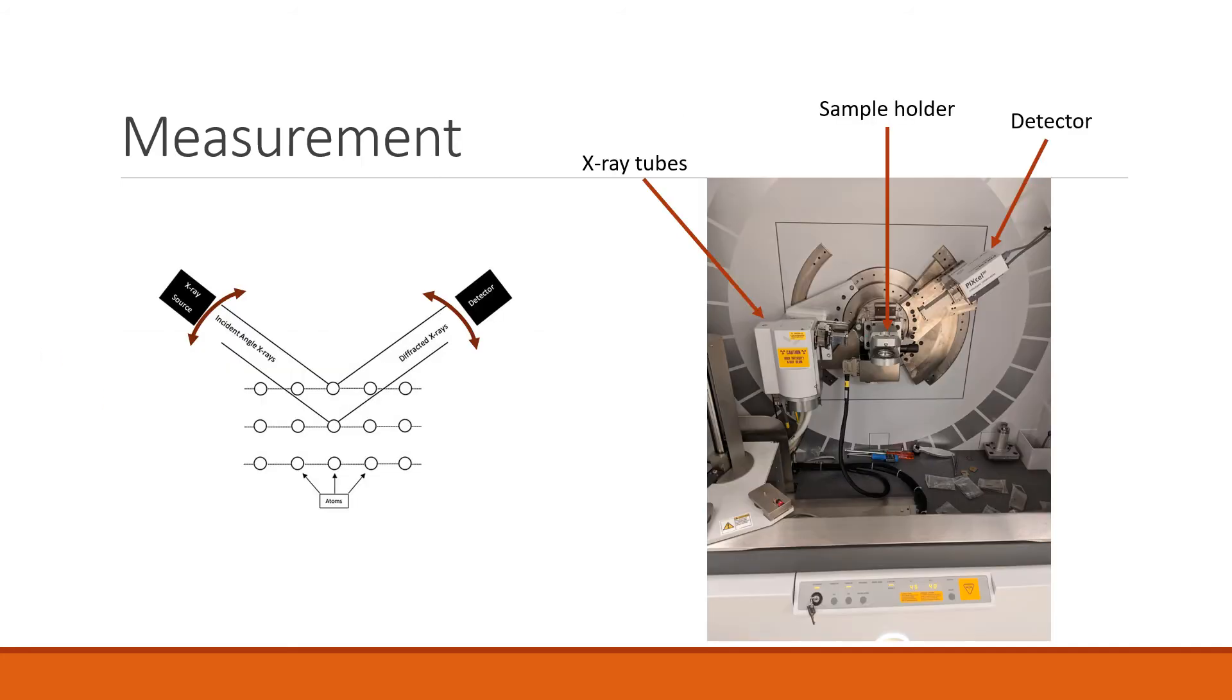In order to measure x-ray diffraction, we can use what's called a diffractometer. So here we have the parts of a diffractometer labeled. First are the x-ray tubes, which is where the x-ray beams are initially produced. Then those beams meet the sample holder, which is where you would place the powder sample that you would want to study. And then we have the detector, which detects and measures the diffracted beams.